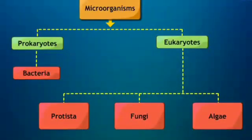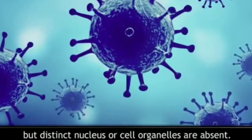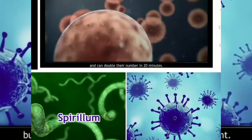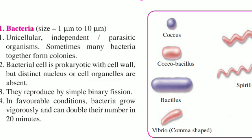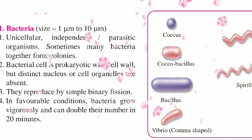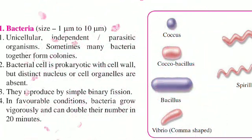Let us move towards classification of microbes. Among living organisms, microorganisms are the largest in number, hence they are classified as follows. Microorganisms are divided into two groups: prokaryotes and eukaryotes. Prokaryotes include bacteria, and eukaryotes include protists, fungi, and algae. Bacteria are unicellular, independent, parasitic organisms. Sometimes many bacteria together form colonies. A bacterial cell is a prokaryotic cell without a distinct nucleus. They reproduce by simple binary fission, and in favorable conditions bacteria grow vigorously and can double their number in 20 minutes.